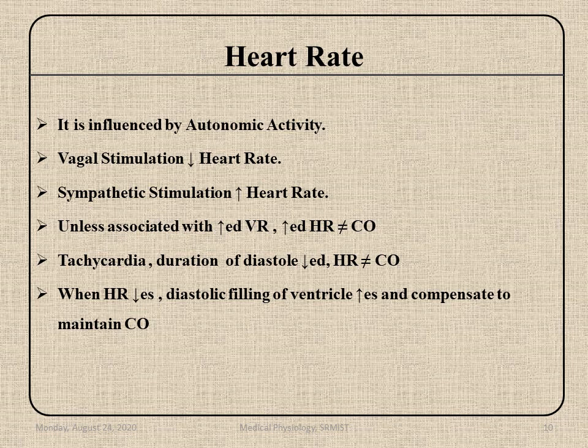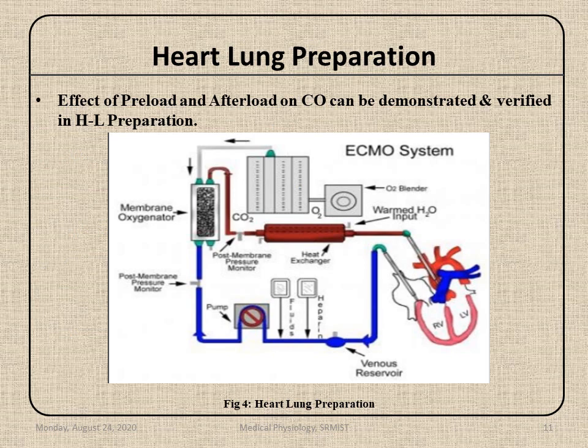Now heart rate: cardiac output is a product of heart rate and stroke volume. Heart rate is influenced by autonomic activity — vagal stimulation decreases heart rate and sympathetic stimulation increases it. Unless the increase in heart rate is associated with adequate venous return, it will not effectively increase cardiac output. In tachycardia, the duration of diastole is decreased, so heart rate alone will not affect cardiac output positively. When heart rate decreases, diastolic filling of the ventricle increases to compensate and maintain cardiac output.